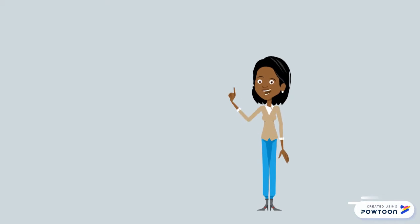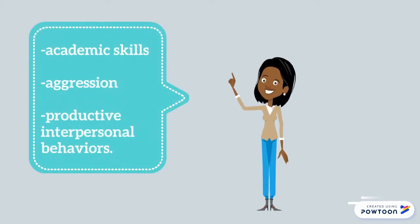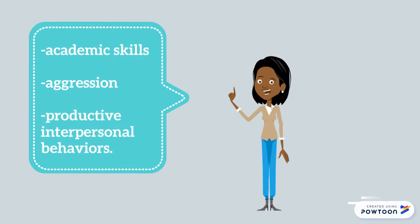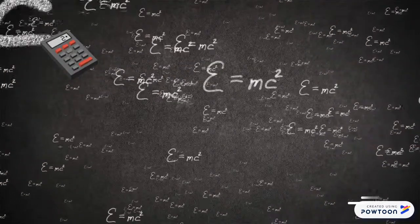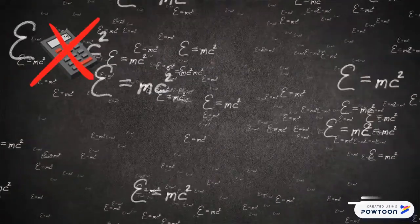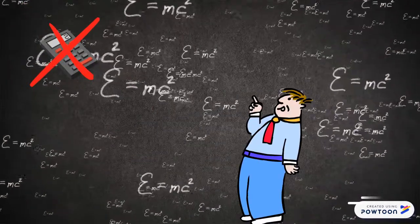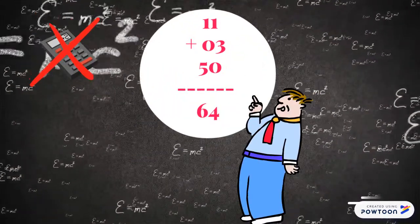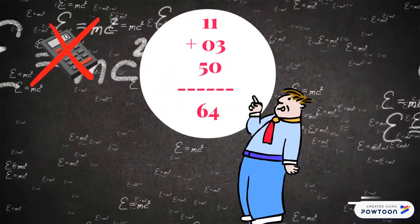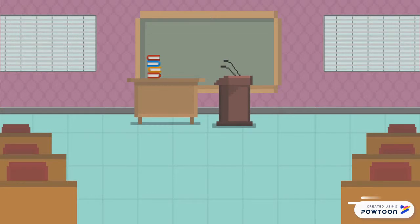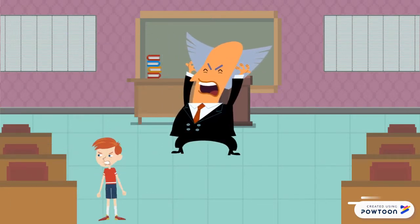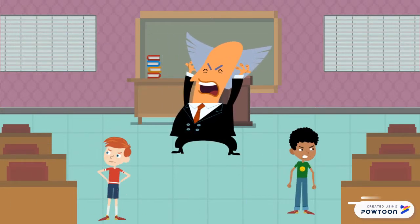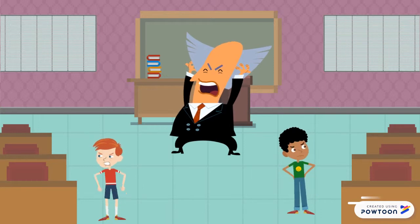Modeling has an impact in three areas: academic skills, aggression, and productive interpersonal behaviors. We learn a lot of our academic skills by observing what others do, such as instead of using a calculator, the teacher shows the learner how to solve the math problem. Also, studies indicate that children who observe aggressive models will in turn act more aggressively.